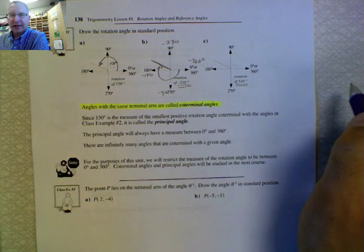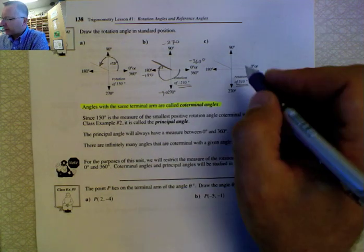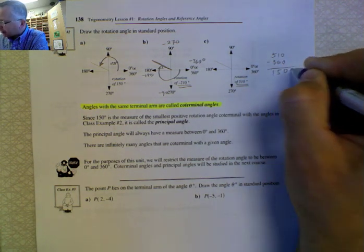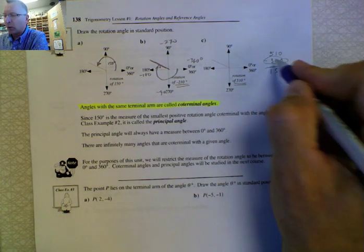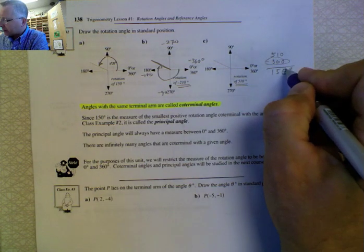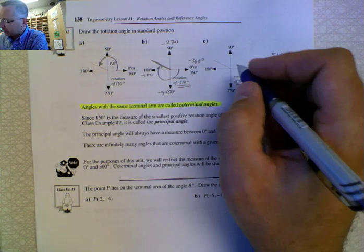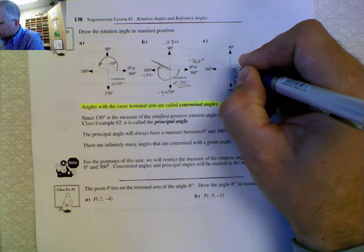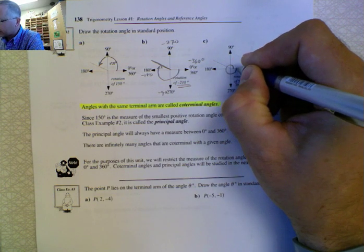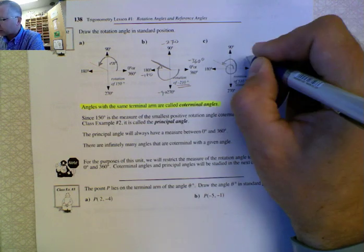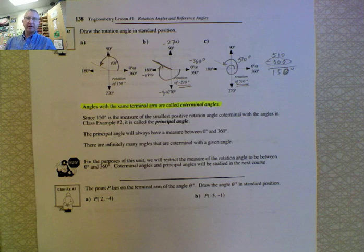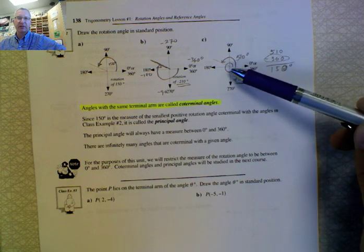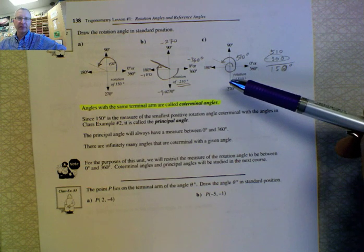The third angle is 510 degrees. If you subtract 360 from 510, you get 150 degrees — meaning we make one complete rotation of 360 degrees, then continue an additional 150 degrees. To draw this, we start at the positive x-axis, make one complete rotation, then continue to the terminal arm. When you see drawings with multiple spirals, that means the angle is more than 360 degrees.